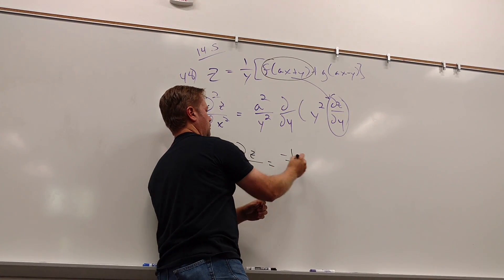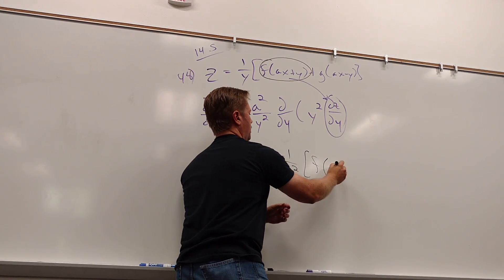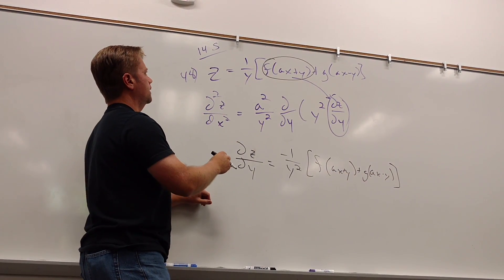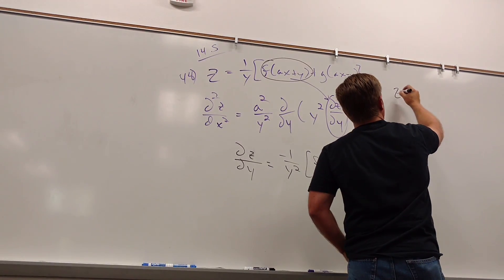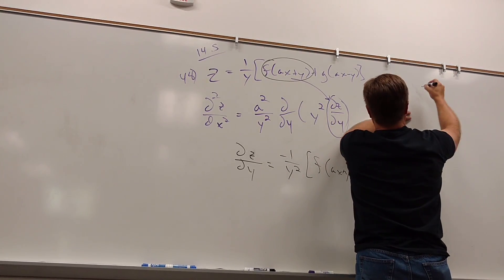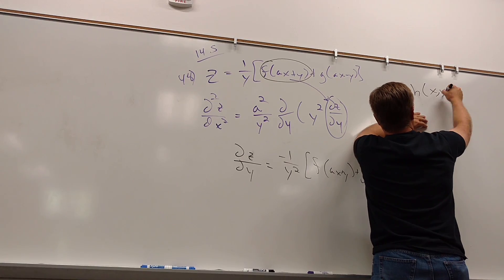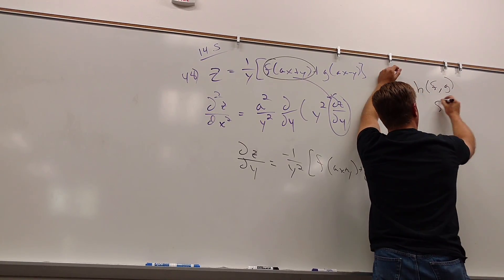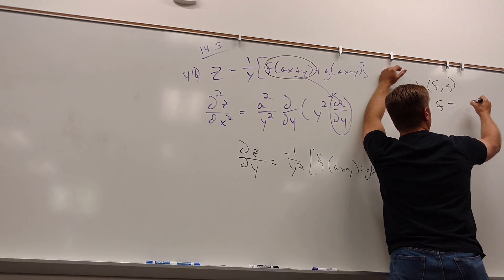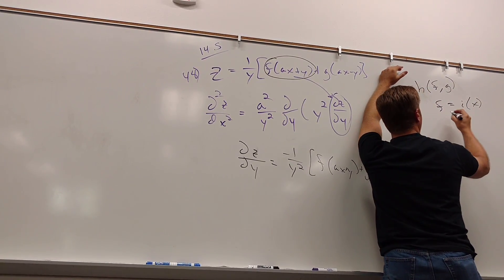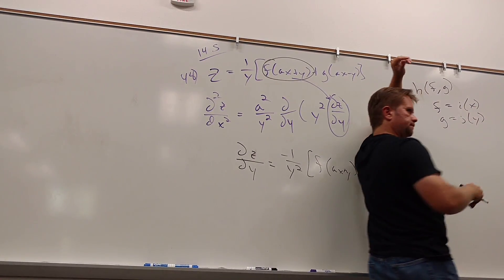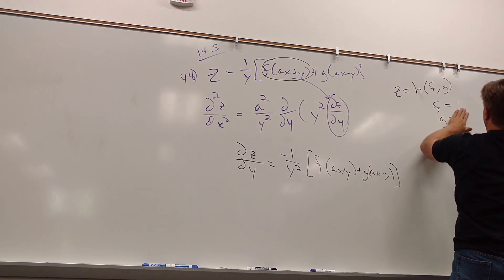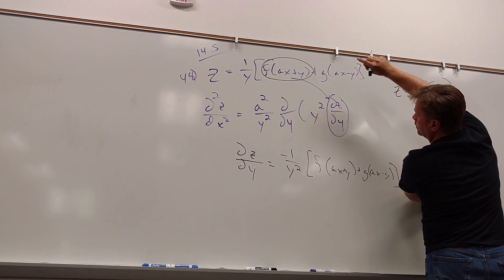What's the derivative of the 1 over 1? Negative one over one. And then you just have all this stuff — f of (ax + y) plus g of (ax − y). So Z is a function of X and Y, but you just have compositions of those functions inside. Let's take a look at just this piece: how would you do the partial of f(ax + y) with respect to Y? Since it's a composition, you've got to use the chain rule.